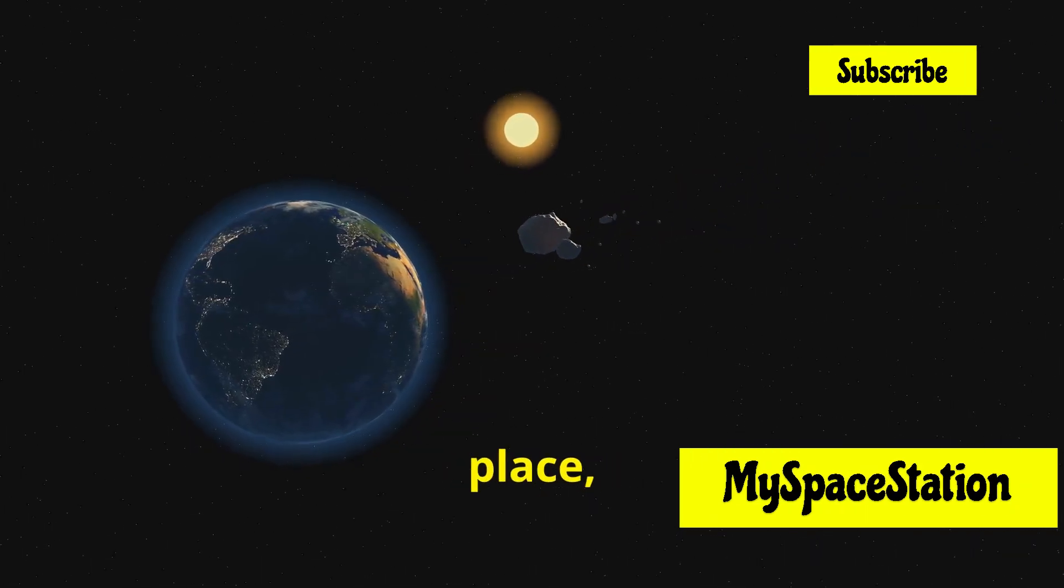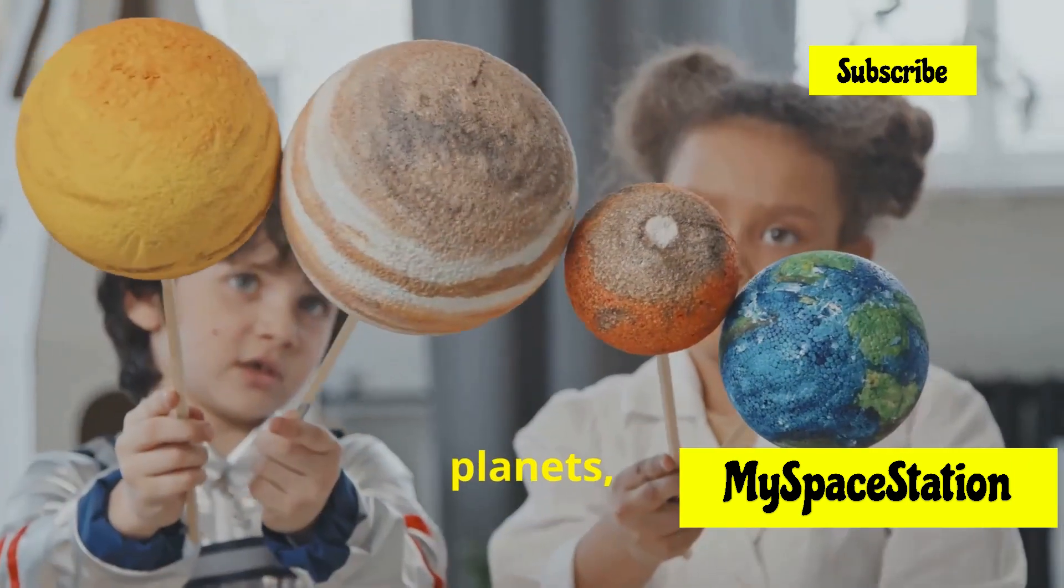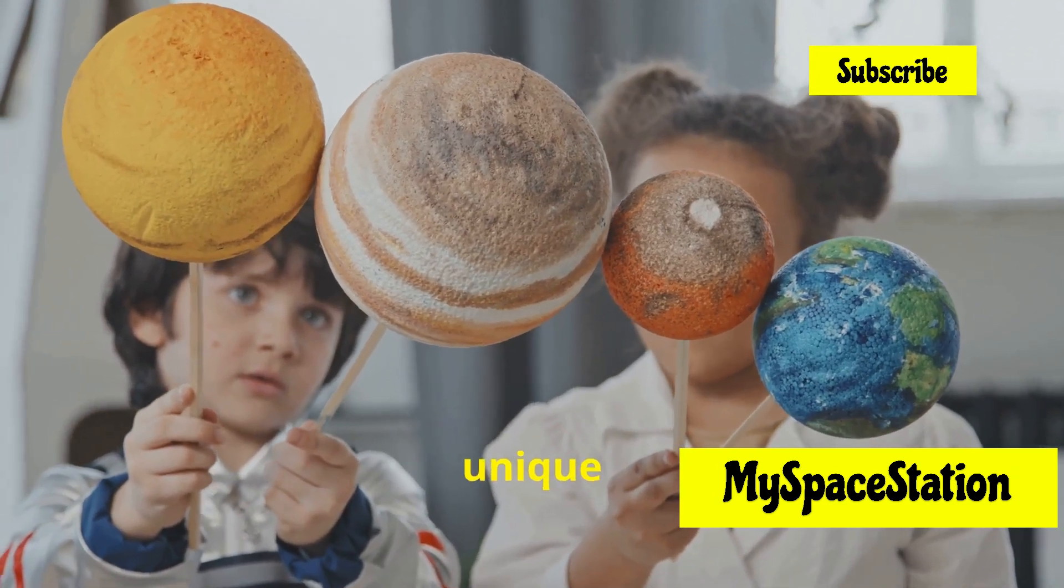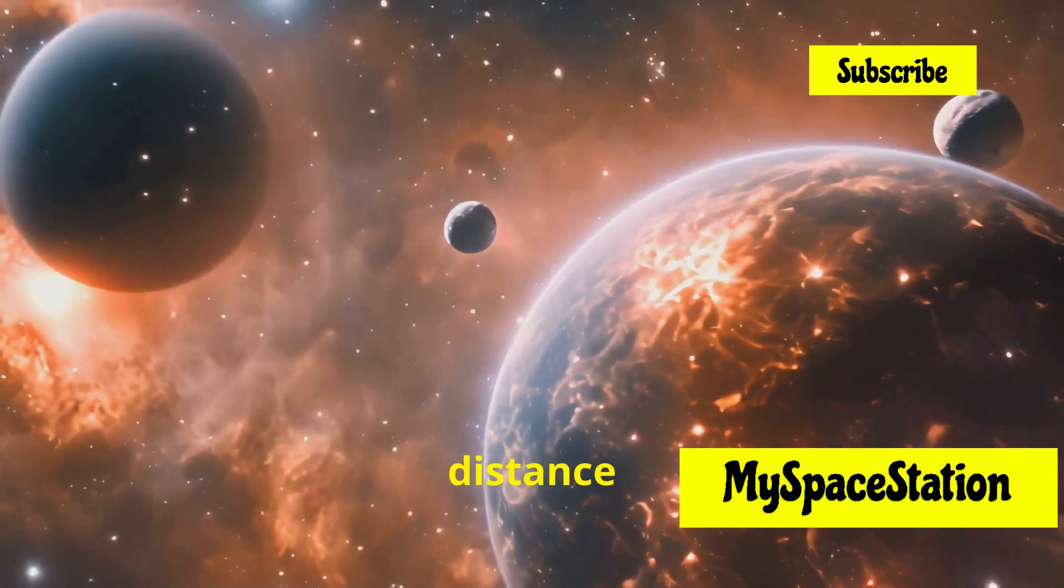Our solar system is a bustling place, teeming with activity and cosmic wonders. Eight planets, including Earth, orbit the Sun, each following its own unique path. These planets vary greatly in size, composition and distance from the Sun.